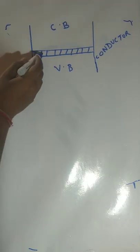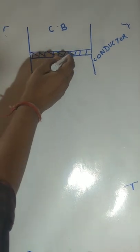Before that there are three types of material. Conductors with valence band and conduction band overlapping.